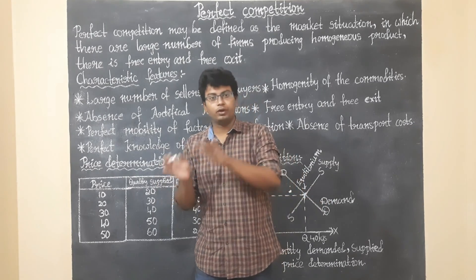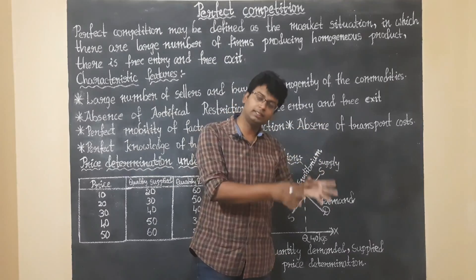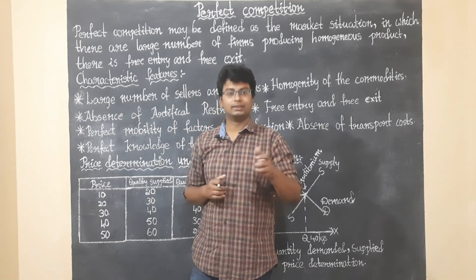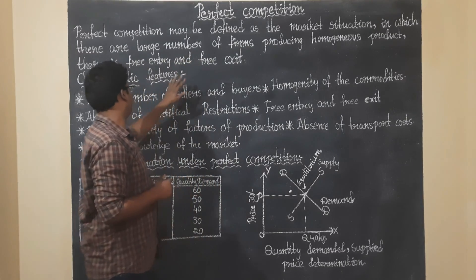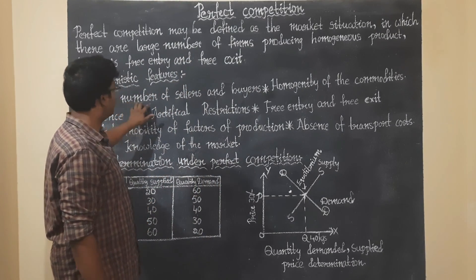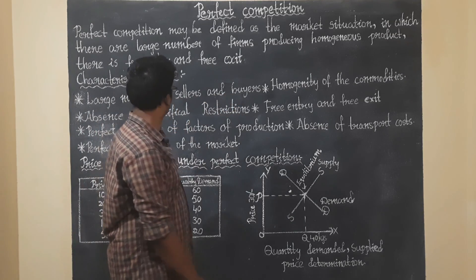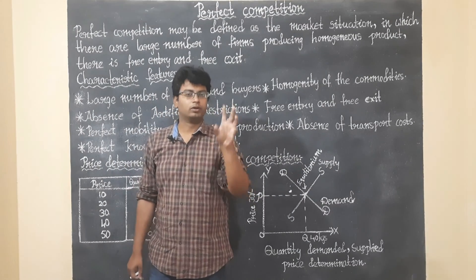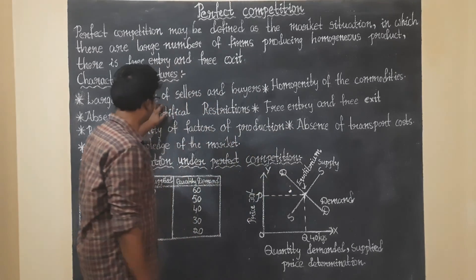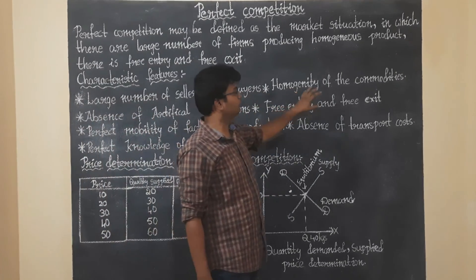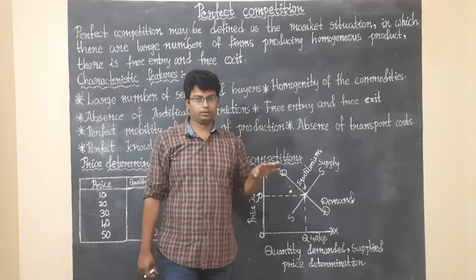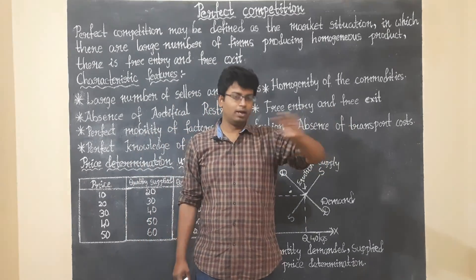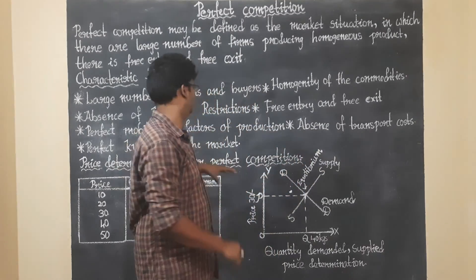There are no restrictions on entry and no restrictions on exit. Now, the characteristics of perfect competition: the first characteristic is a large number of sellers and buyers — many buyers and many sellers. The second characteristic is homogeneity of the commodities — a particular same level of quality is maintained; this is the homogeneous product.